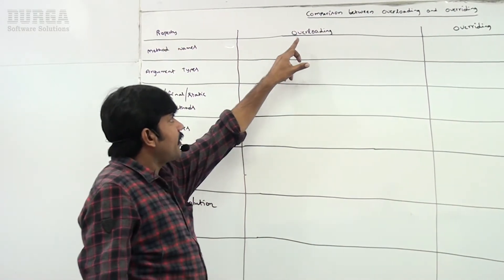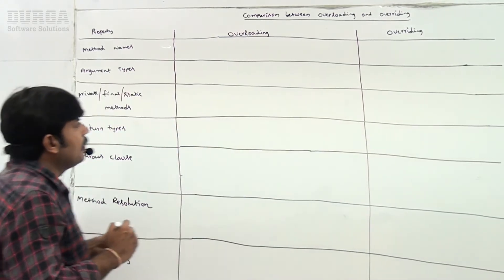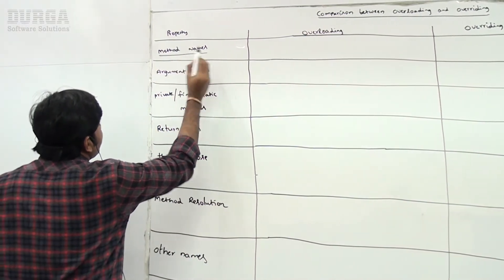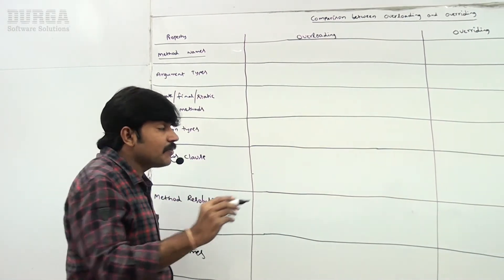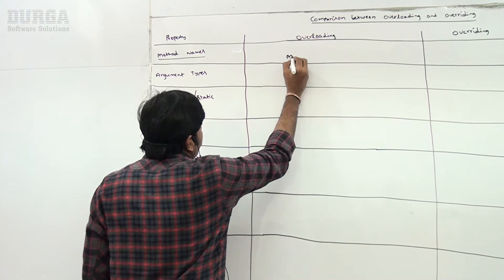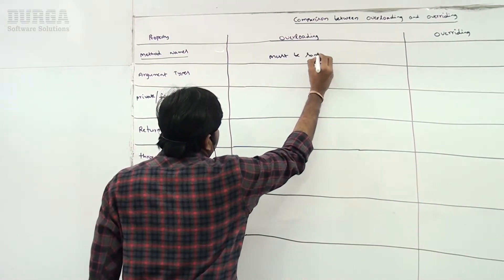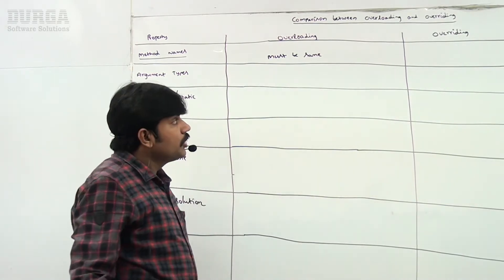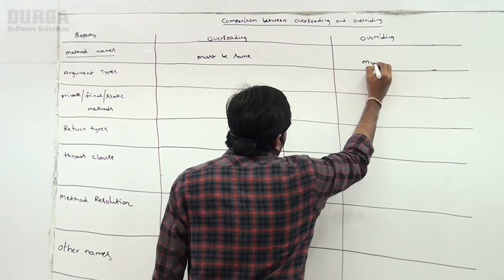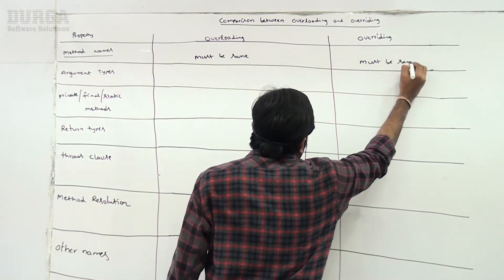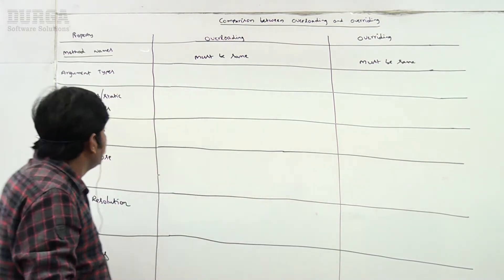The first property we compare is method names. In overloading, method names must be same. In overriding also, method names must be same. Whether it is overloading or overriding, method names must be same.